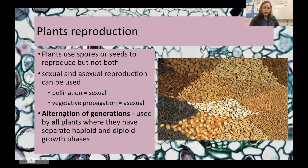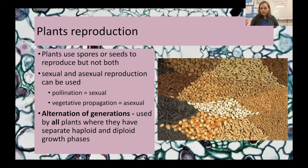Alternation of generations is where plants use two distinct growth phases: a haploid phase in which the plant grows and passes on its DNA, and then a diploid phase that the plant moves through. We'll look at both of those and some examples of them.